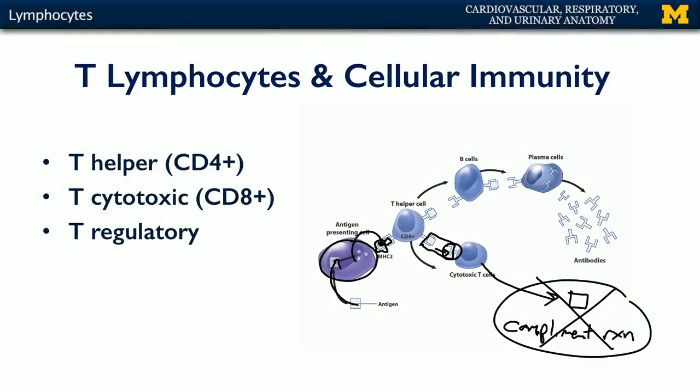T regulatory cells, or T regs, are important cells for helping to prevent autoimmunity — helping to prevent the body's own T lymphocytes from attacking itself.